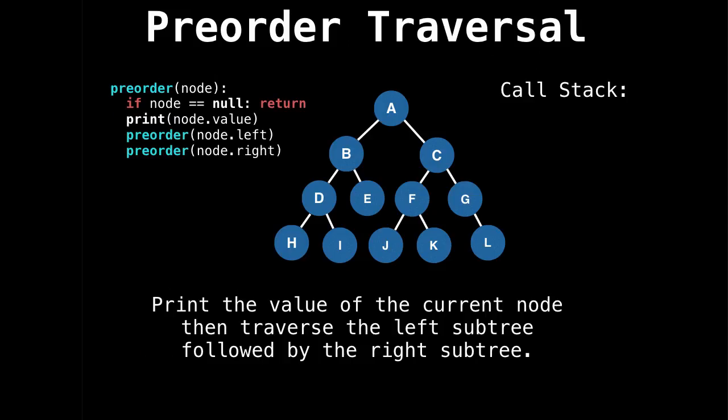Let's go into some detail on how preorder works. On the right, I'm going to maintain a call stack of what gets called. So when we're recursing back up, we know what called us to know what node to go to. What you need to know about preorder is that we print the value of the current node, and then we traverse the left subtree followed by the right subtree.